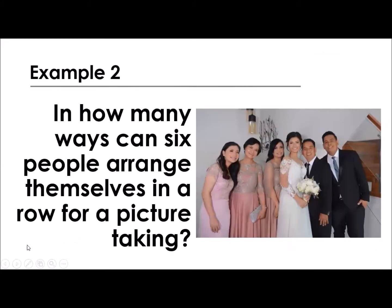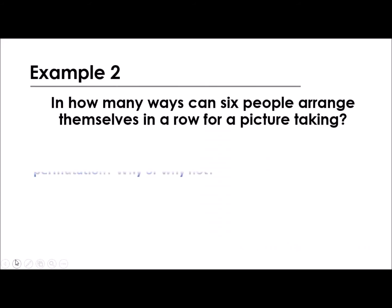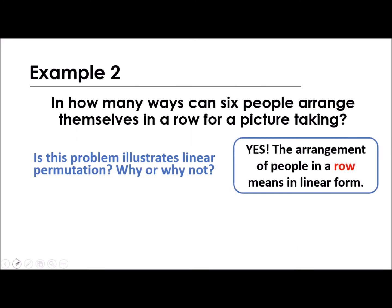Now, let me share with you this picture, a family picture of ours. In how many ways can 6 people arrange themselves in a row for a picture taking? When taking pictures, it's in a row. So is that permutation? Of course, we're talking about people. There's arrangement. So that is permutation. And the problem specifies in a row, so it's linear form.